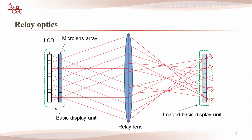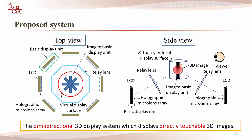By using relay lenses, the light rays from basic display units are gathered at a long distance from the basic display unit. We construct the proposed system by using this imaged basic display unit. This figure shows the omnidirectional 3D display system. The multi-basic display units are aligned in a circle and imaged at the center of the circle in in-flow form by relay optics.